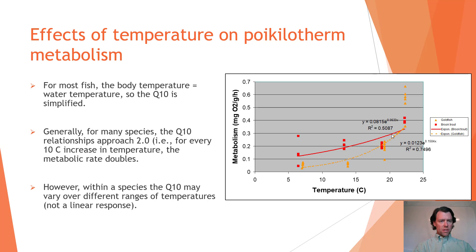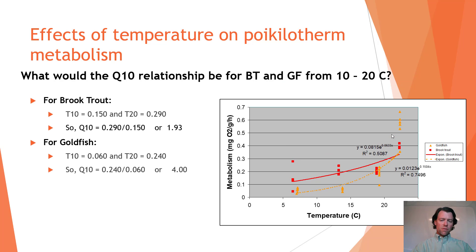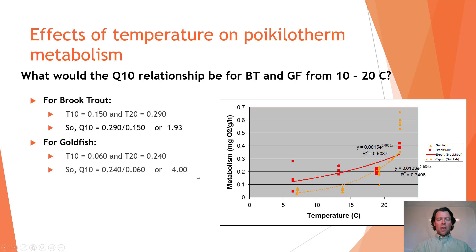For brook trout moving from 10°C to 20°C: initial metabolic rate at 10°C is 0.15, at 20°C is 0.29, so Q10 = 1.93 — close to 2. For goldfish: metabolic rate at 10°C is 0.06, at 20°C is 0.24, so Q10 = 4.0 — much greater than for brook trout.